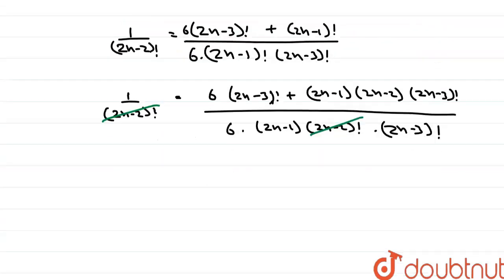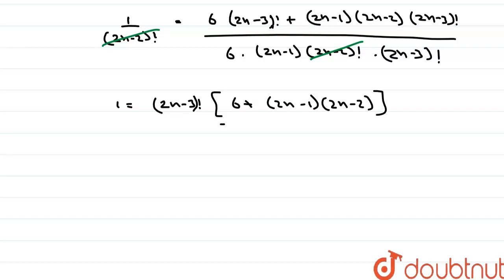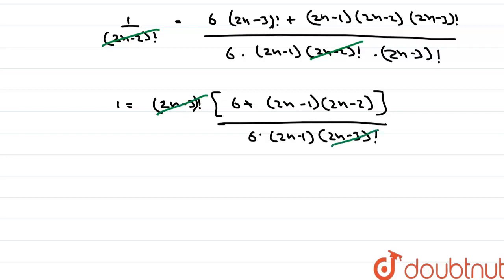After the (2n-3)! cancels out, we get: 6(2n-1) = 6 + (2n-1)(2n-2). Expanding the right side: 6 + 4n² - 4n - 2n + 2, which gives 6(2n-1) = 4n² - 6n + 8.